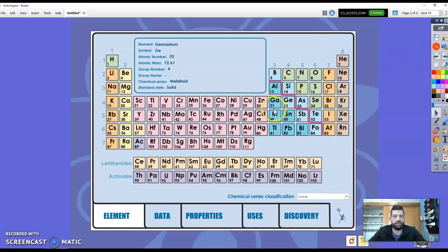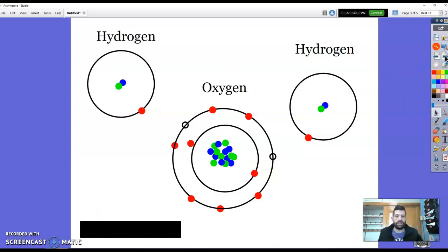So this is the zigzaggy line that tells us, to the left metals, to the right non-metals, and that will be important here on the next slide. So here we have an oxygen molecule and two hydrogen molecules.